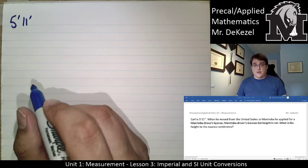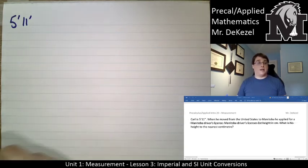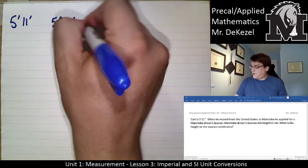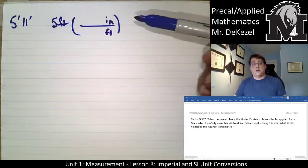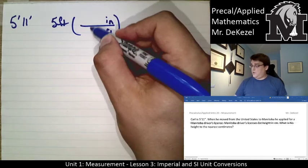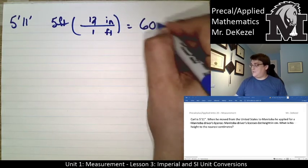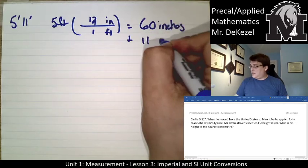Let's convert it all into inches. 5 feet 11 inches: we take 5 feet and convert it into inches. What we have on the bottom, what we want on the top. There's 12 inches in one foot, therefore 5 feet is 60 inches, and then we add the 11 inches to get 71 inches total.